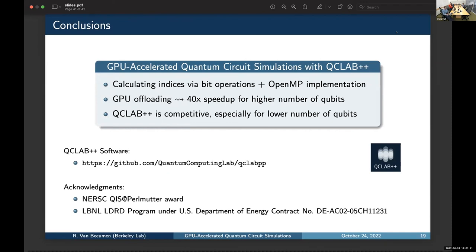So I think I have to wrap up. To conclude, what we have developed is a GPU-accelerated quantum circuit simulator with QCLab++. And we have done that by calculating indices via bit operations and using an OpenMP implementation, which is very portable. And this resulted that we can do a very efficient GPU offloading, giving us speed-up factors up to 40 times. And the experiments have shown that QCLab++ is competitive with some other packages which are out there. So please check out our software. And I would like to acknowledge NERSC for awarding this QIS Apparel Motor Award. And then also the LBNL-LGRD program, which allowed us to make a first implementation of this package. Thank you.